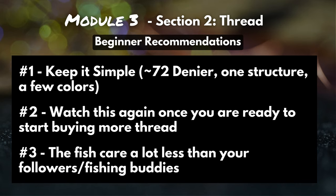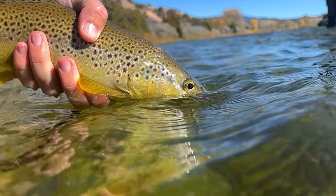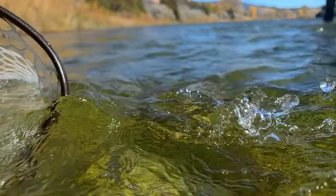Recommendation number three: the fish care a lot less than your followers or your fishing buddies. Let's say you're on the river and there's a 20-inch brown trout sipping mayflies off the surface — you throw a beautiful cast, drag-free drift. That fish isn't going to refuse your fly because it was tied with 6-aught or 16-aught, or polyester or nylon. All they care about is that your fly kind of, sort of, somewhat looks like a bug.